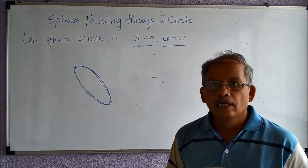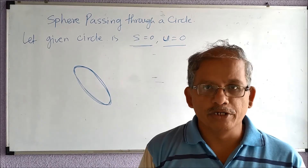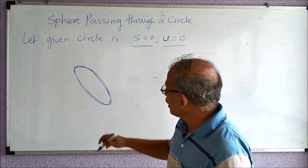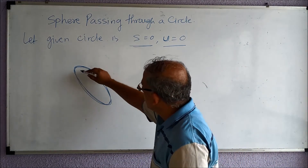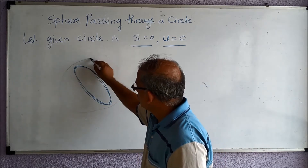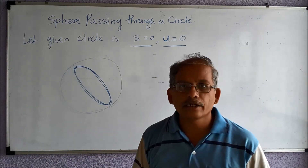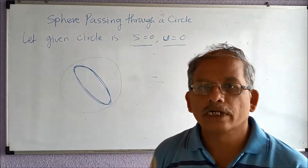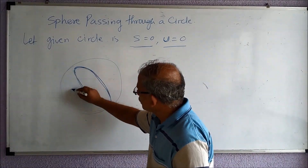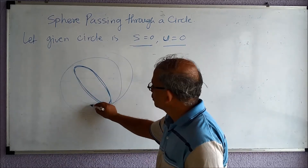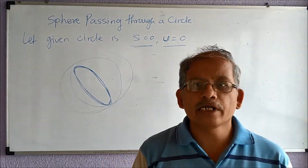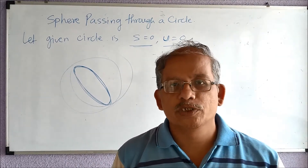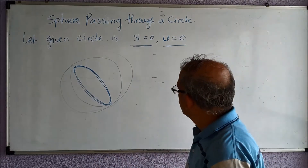There is a family of spheres which can pass through this circle. Some of the spheres may have this circle as a great circle — a great circle is a circle that passes through the center of the sphere. Some spheres may have this circle at the top, so you can have different kinds of spheres passing through this circle.